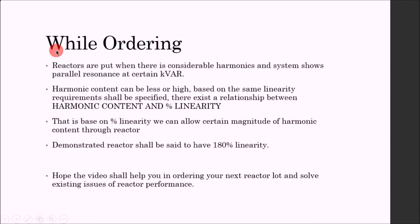So while ordering reactors when there is considerable harmonics and system shows parallel resonance at certain kVAR value, harmonic content can be less or high. Based on the same, linearity requirements shall be specified. There exists a relationship between harmonic content and percentage linearity. That is based on percentage linearity we can allow certain magnitude of harmonic content through reactor. Demonstrated reactor shall be said to have 180 percent linearity. Hope the video shall help you in ordering your next reactor lot and solve existing issues of reactor performance.